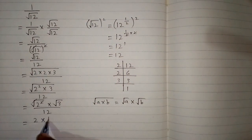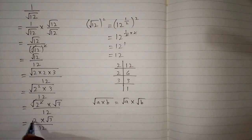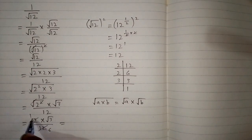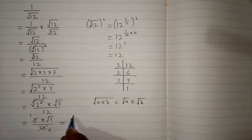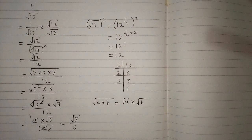Again we can cancel the square root and the square by the same property, giving us 2 multiplied by square root of 3 upon 12. Now we can cancel 2 and 12, leaving 6 in the denominator. So we have square root of 3 upon 6, and this is the required answer.